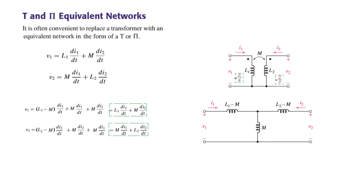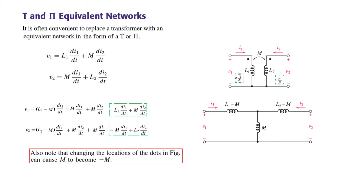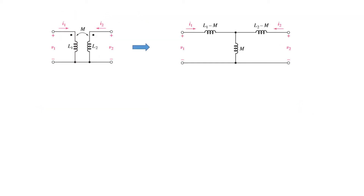Similarly, V2 gives the same answer, confirming these two networks are equivalent. An important point to note: changing the dot convention — that is, relocating the dots — causes M to become minus M. So if the dots are placed at different positions, all the M terms in the equivalent circuit must be replaced by minus M.